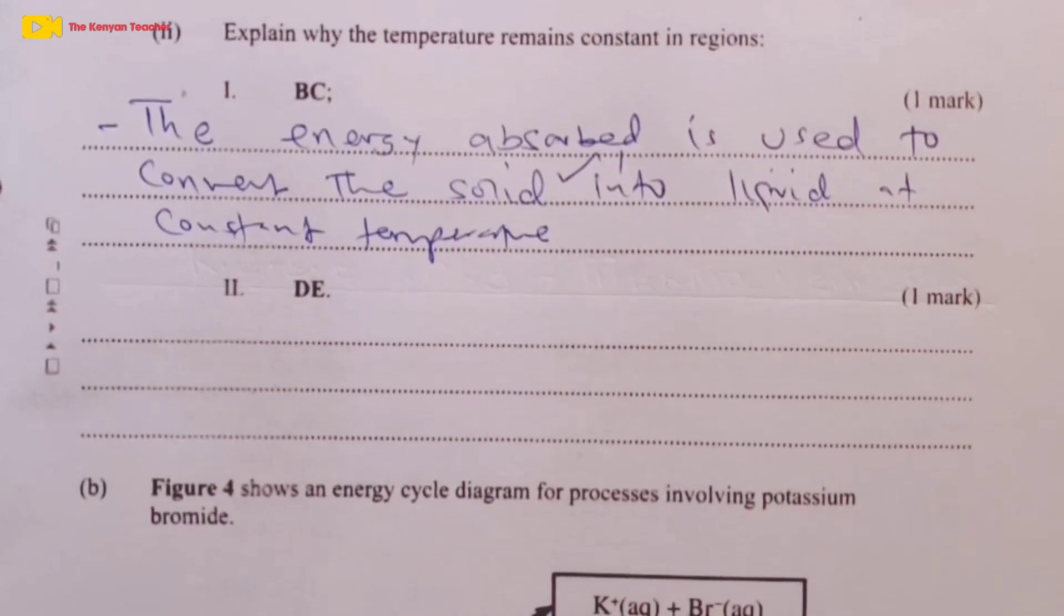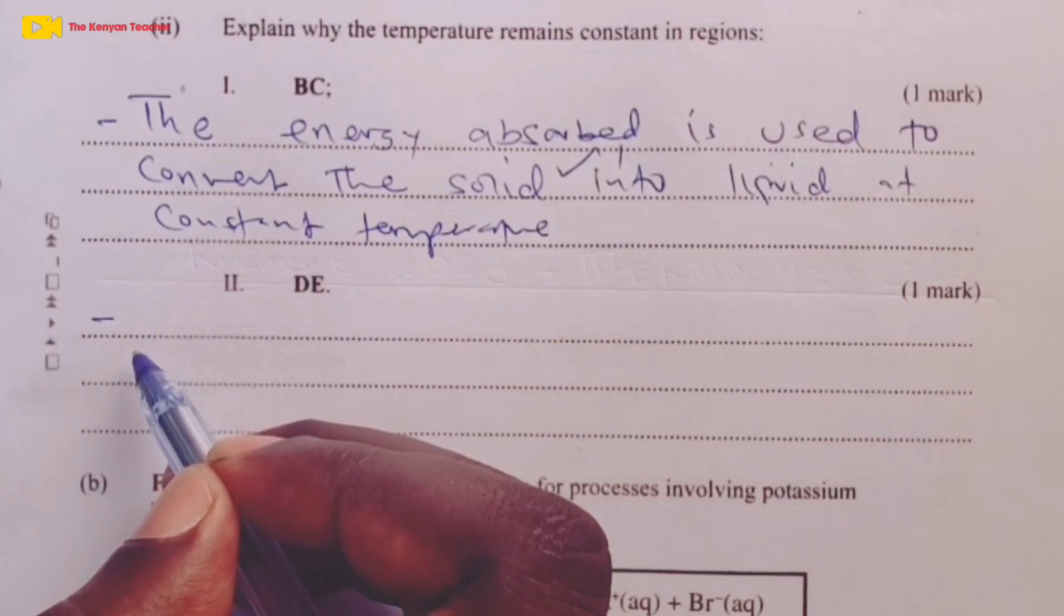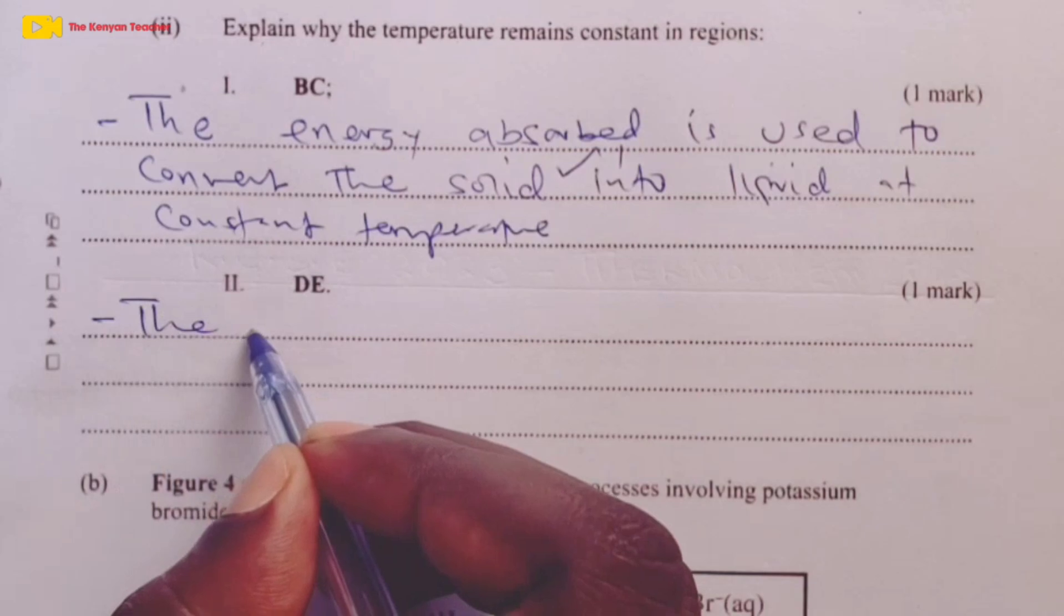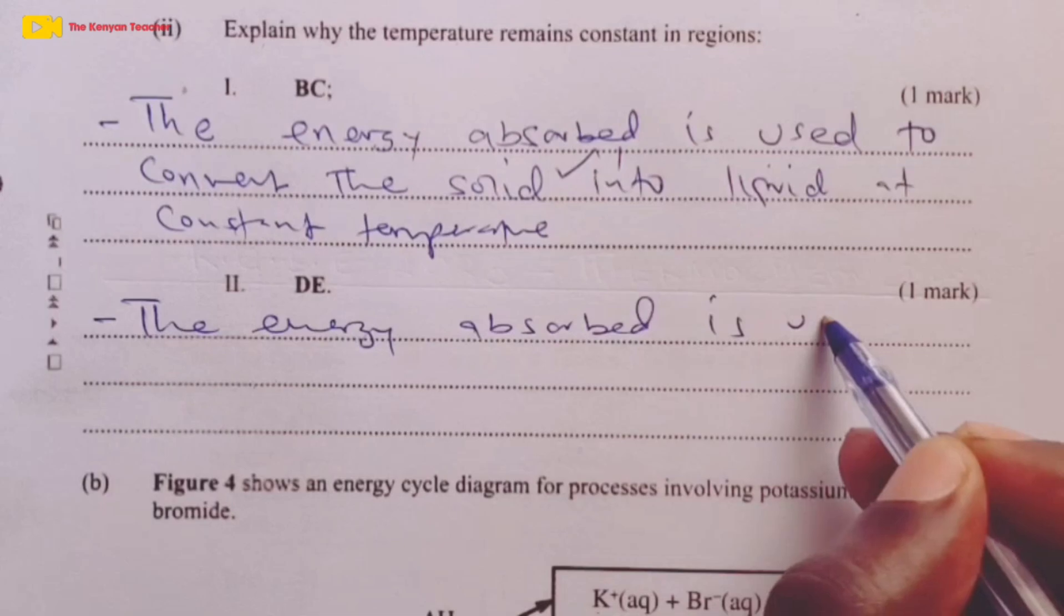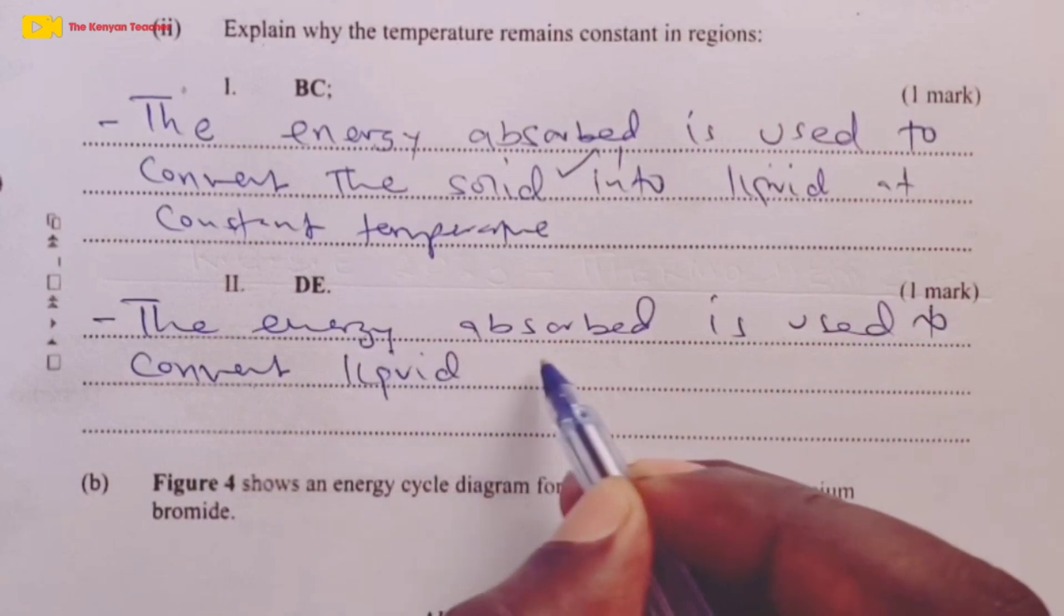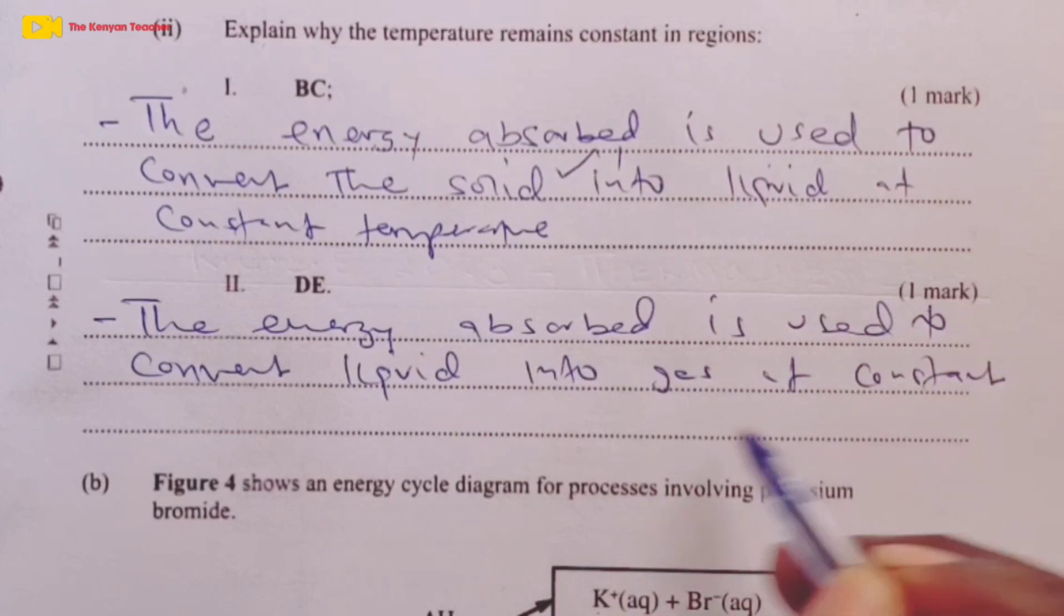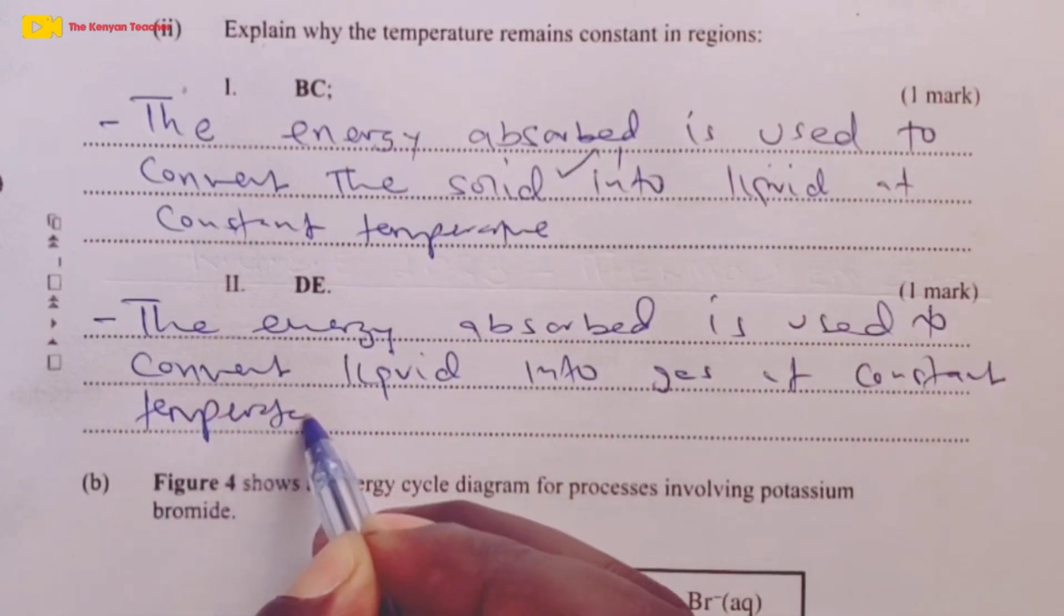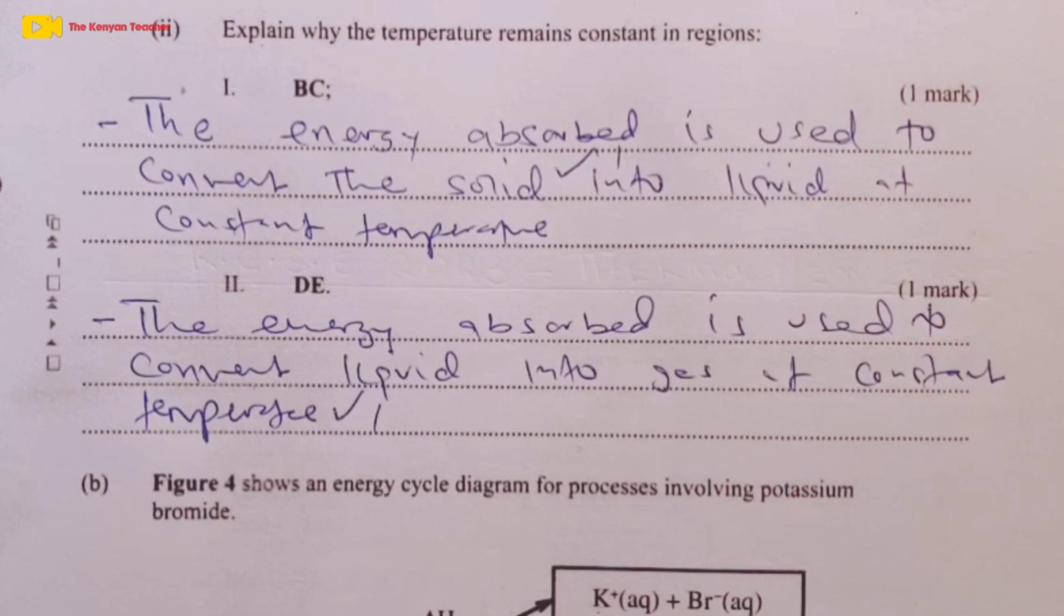When it comes to region D, E, the reason why temperature remains constant is that the energy absorbed here is now used to convert the liquid into gas. And of course, this also happens at constant temperature. That does it for the part of question 4 that tested on the heating curve learned at form 1.